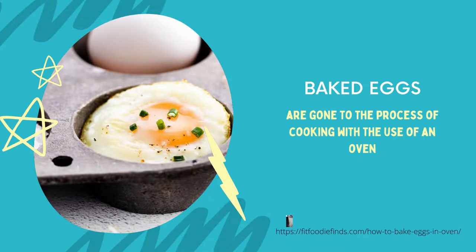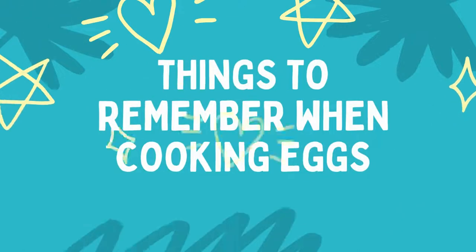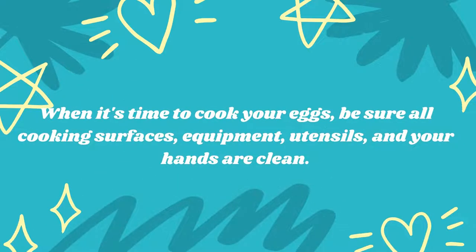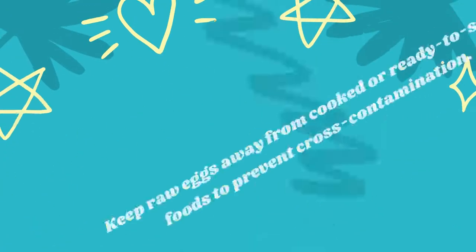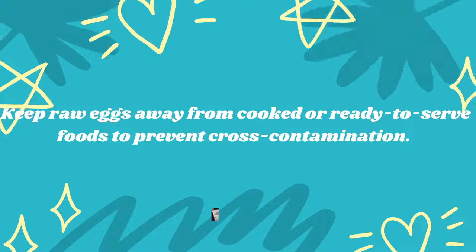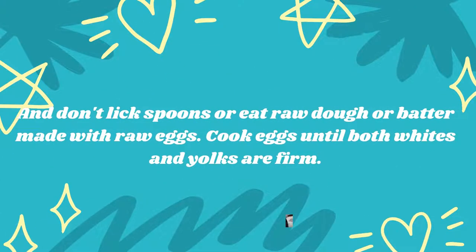The last variety is baked eggs, which are done using an oven. Here are things to remember when cooking eggs: keep eggs away from cooked or ready-to-serve foods to prevent cross-contamination. Do not lick spoons or eat raw dough or batter made with raw eggs. Cook eggs until both whites and yolks are firm.